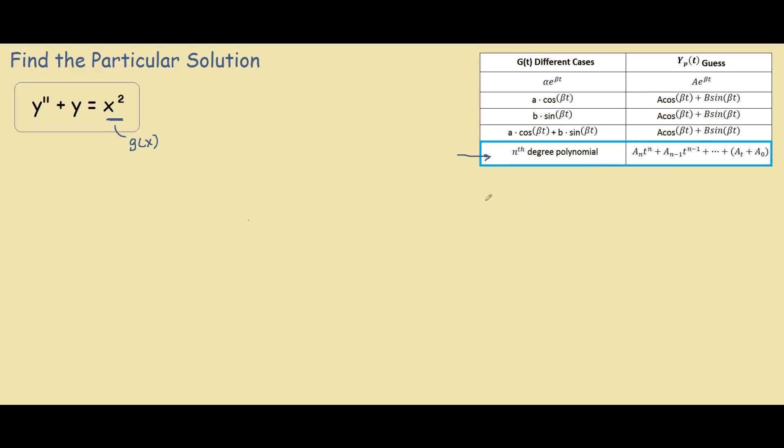So we're going to assume a general form for our g of x, and it will be y particular equals a x squared plus bx plus c.